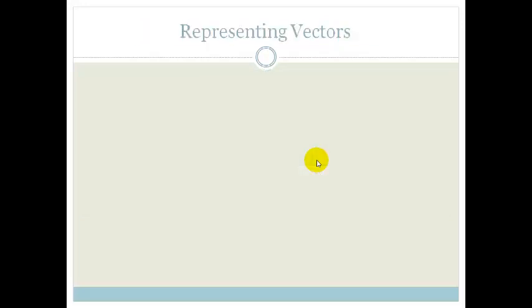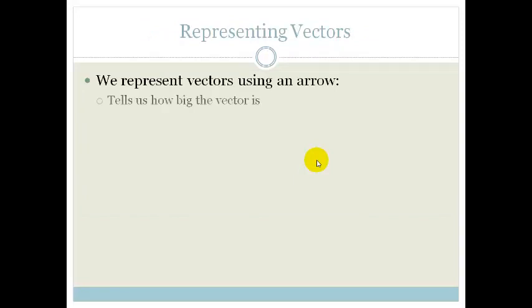Right. Let's look at representing a vector. We represent vectors using an arrow. The arrow tells us how big the vector is. So, the longer the arrow, the bigger the vector. And, it tells us the direction of the vector. So, whatever direction the arrow is pointing in, that's the direction of the vector.